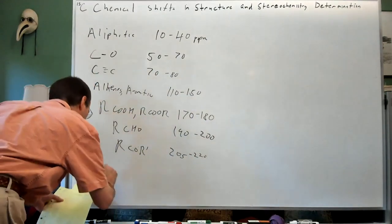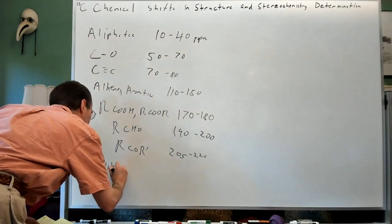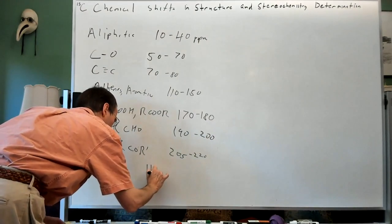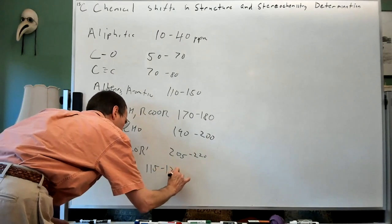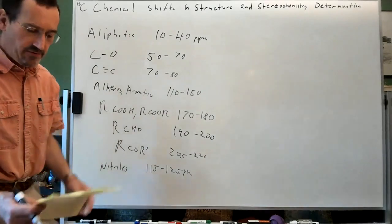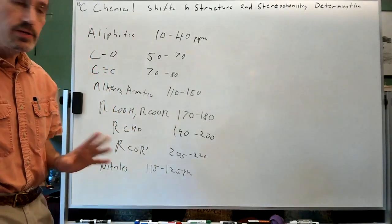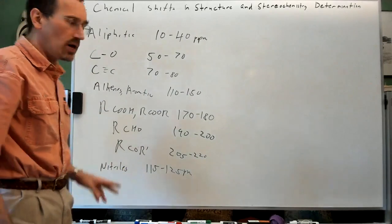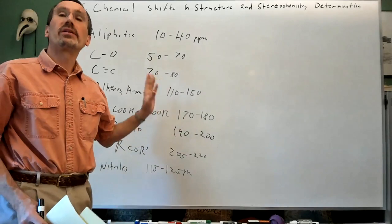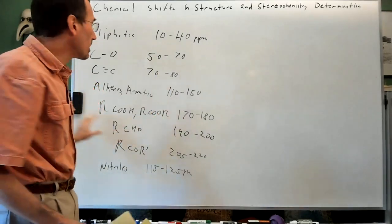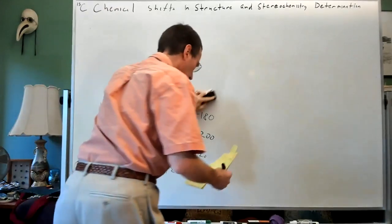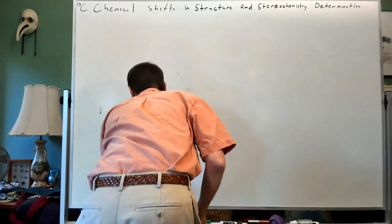Nitriles are usually about 115 to 125 ppm. This is a starting point for basic knowledge. I want to talk more now about the factors that modulate these numbers, so let's take a look at some specific effects.